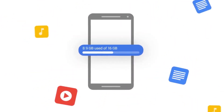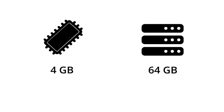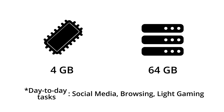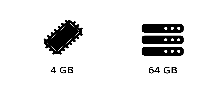The more RAM you have, the more applications you can keep open in the background. All other data is stored on the internal storage, including all the apps installed on your phone. In 2020, 4 GB of RAM and 64 GB of internal storage should be enough for someone who uses their phone for normal day-to-day tasks. But if you want to future-proof your smartphone or plan to game a lot, we highly recommend at least 6 GB of RAM and 128 GB of internal storage.